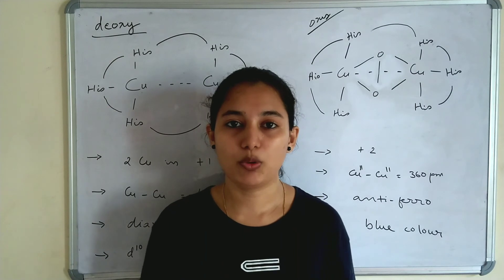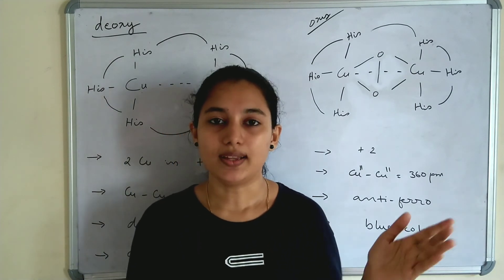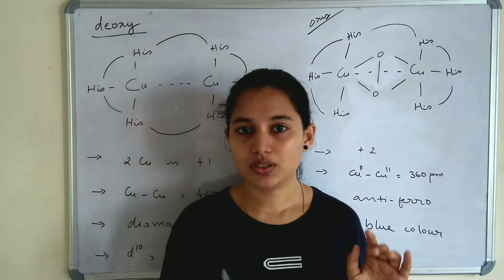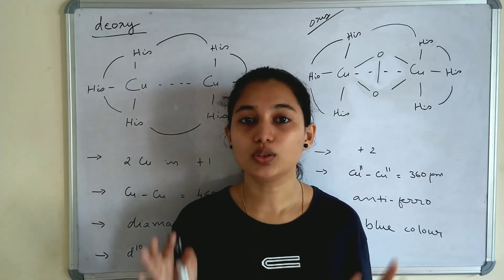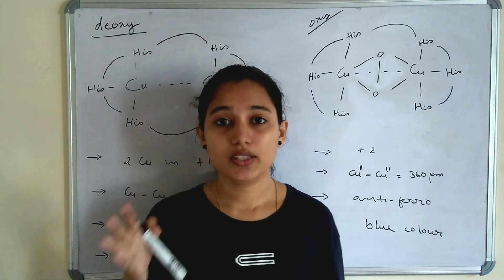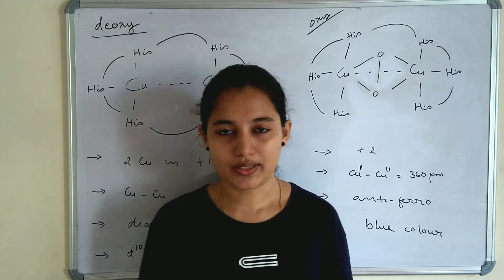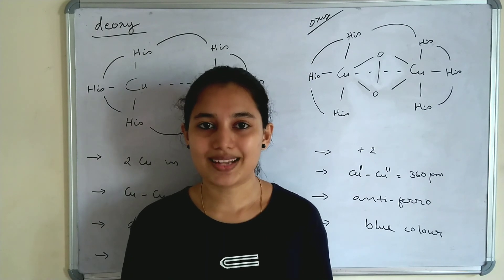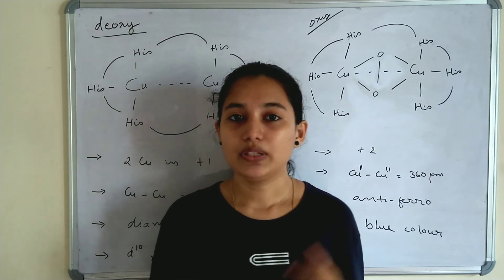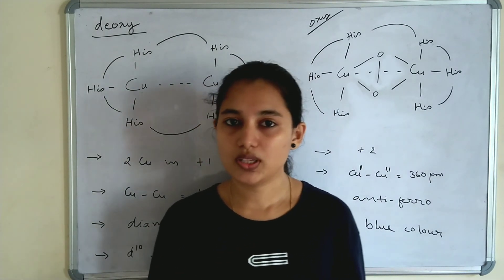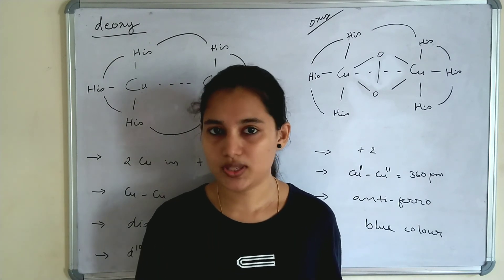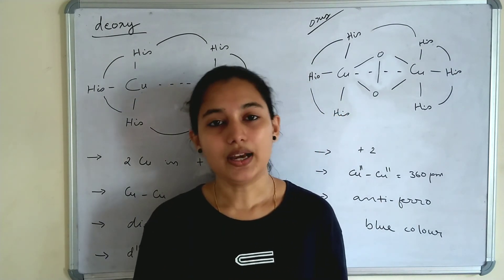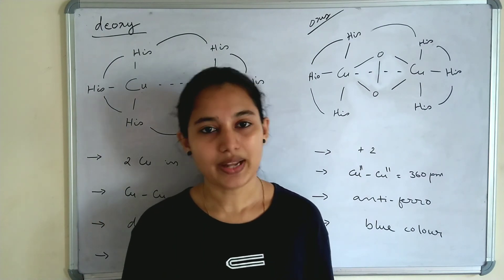We have discussed two important oxygen transport proteins: hemerythrin and hemocyanin. Both are non-heme proteins. In hemerythrin, the central metal atom is iron, while in hemocyanin there is no cyanin — only copper metal atoms. We have seen both the deoxy and oxy forms of hemerythrin and hemocyanin. I hope you all understood. We will see another bio-inorganic topic in our next video.